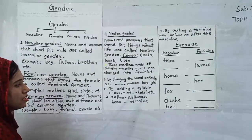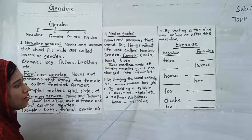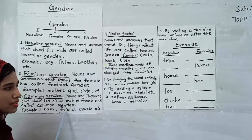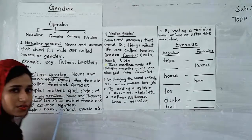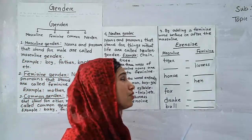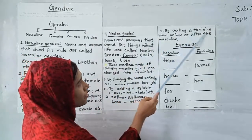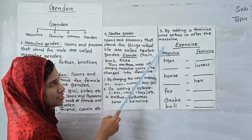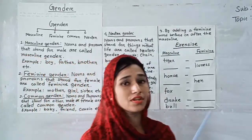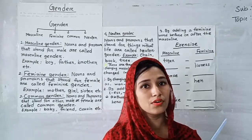Number 2, by adding a syllable like -ess, -ine, or -trix, etc. For example, author to authoress, hero to heroine. Is it clear to everyone? Number 3, by adding a feminine word before or after the masculine gender. For example, grandfather to grandmother, he-goat to she-goat.